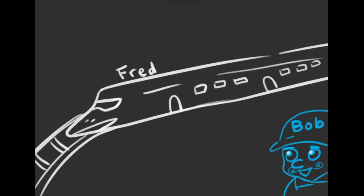Hi kids, it's Bob the train conductor here. I'm here today to talk to you about high-speed bullet train chassis. We're here with our friend Fred the Shinkansen. Fred, can you tell us about yourself?